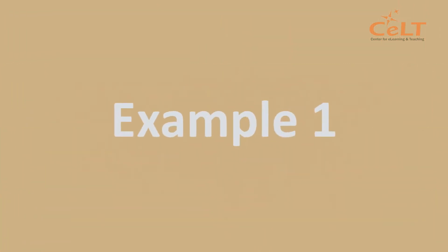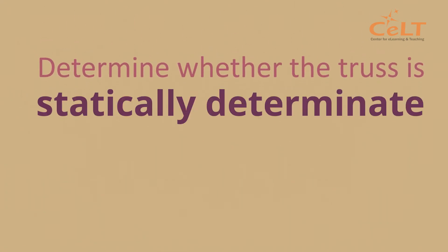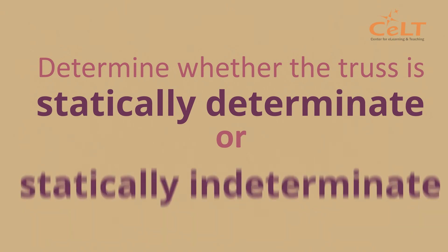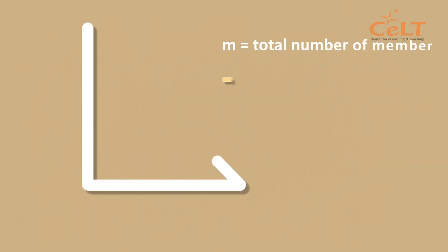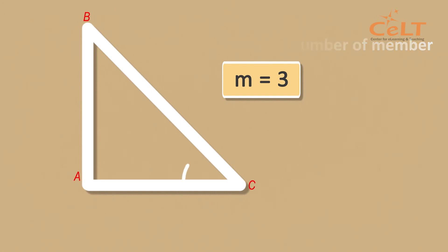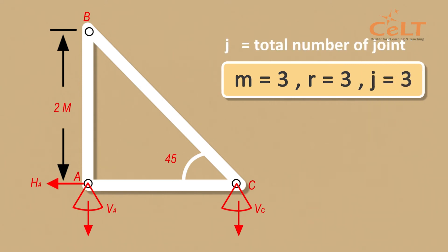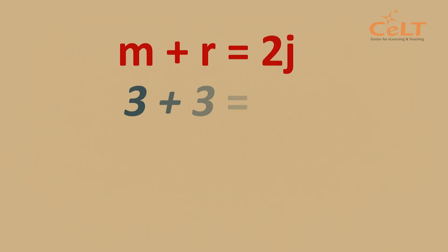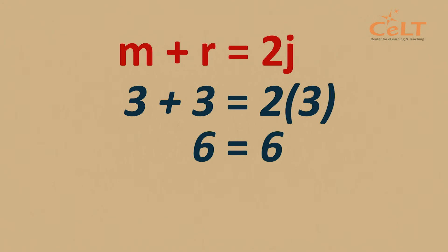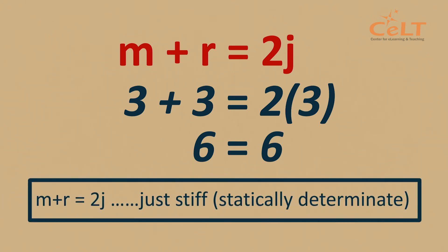Let's look at Example 1. Based on the diagram, determine whether the truss is statically determinate or statically indeterminate. From the diagram, we can see the total number of members is 3, total reactions equals 3, and total joints equals 3. Substituting into the formula M plus R equals 2J, we see that M plus R indeed equals 2J. Therefore, the truss is just stiff or statically determinate.